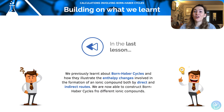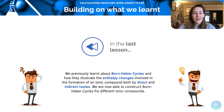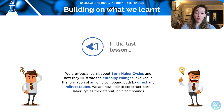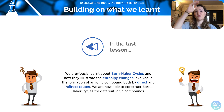Hi and welcome to this lesson on calculations involving Born-Haber cycles. Make sure you've gone through the previous lessons before heading on to this because we've covered a lot of things that we need to be able to apply. We previously learnt about Born-Haber cycles as an intro and how they illustrate the enthalpy changes involved in the formation of ionic compounds, including the direct and indirect routes and how to construct those, as well as the different stages of each one.